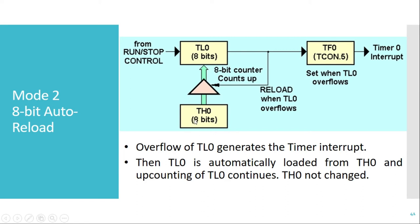After FFh, TL0 rolls back to 20h — not 0 — because the value in TH0 is always reloaded. That is the specialty of auto reload mode: whatever value is in TH0 is the initial counting value for TL0. Whenever TL0 overflows, TF0 indicates the overflow and can generate an interrupt. Mode 2 is generally used for generating a baud rate in serial communication.